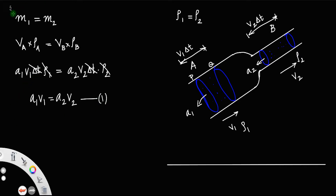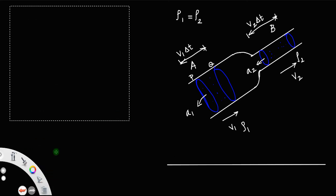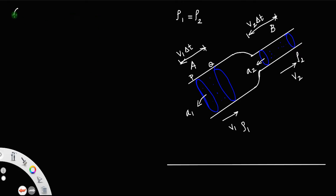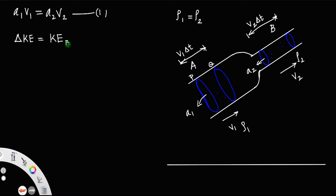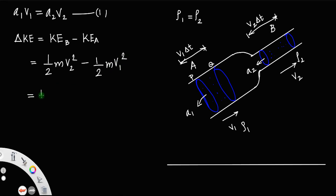We will get different equations for the derivation of Bernoulli's equation. Now we have change in kinetic energy at the two sections, delta KE. Change in kinetic energy equals kinetic energy at section B minus kinetic energy at section A, that is half m V2 squared minus half m V1 squared. Taking half m outside, it will be half m into V2 squared minus V1 squared.